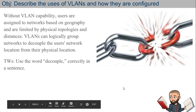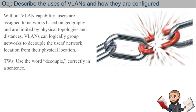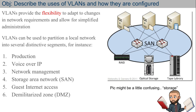Subnetting is even something we turn into a competition in class. Without VLAN capability, users are assigned to networks based on geography and are limited by physical topologies and distances. VLANs can logically group networks to decouple the user's network location from their physical location. VLANs provide the flexibility to adapt to changes in network requirements and allow for simplified administration. VLANs can be used to partition a local network into several distinctive segments.